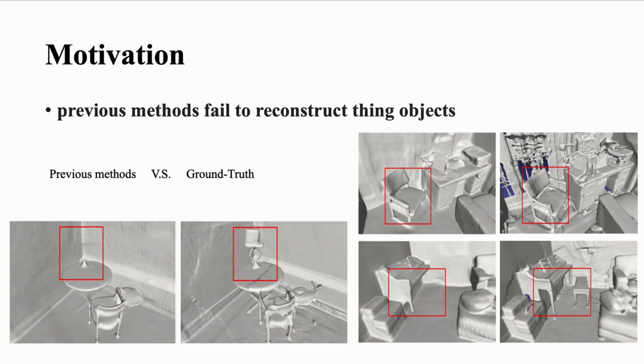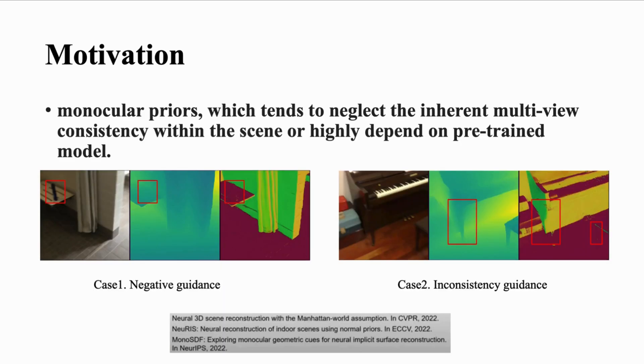In the world of 3D computer vision, accurately reconstructing complex scenes from multi-view 2D observations remains a formidable challenge. Current methods often struggle with preserving fine details, especially in small objects. Existing neural rendering and implicit shape representation techniques, though advanced, fall short in capturing the intricate details of 3D scenes, leading to inconsistent and erroneous reconstructions.